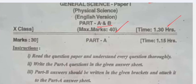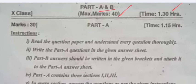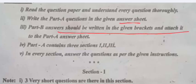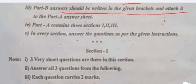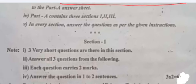Part A: 30 marks, time is 1 hour 15 minutes. Read the question paper and understand every question thoroughly. Write the Part A questions in the given answer sheet. Part B answers should be written in the given brackets and attach it to the Part A answer sheet. Part A contains three sections I, II, III.